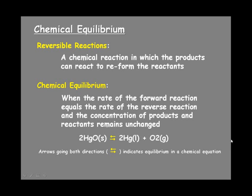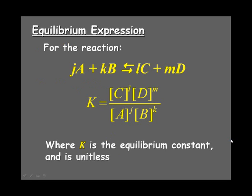Now for equilibrium reactions we write what is called an equilibrium expression. So on the screen there's a generic reaction. The lowercase letters indicate coefficients, the uppercase letters indicate substances. The equilibrium constant K is equal to the products over the reactants, with all of them raised to the power of their coefficients.